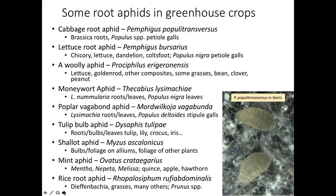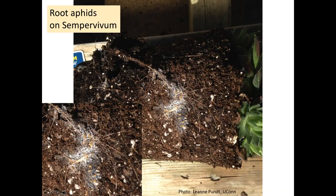When dealing with root aphids, this is the kind of thing people first encounter. They might take the plant out of the pot and see waxy white areas, and if you look more closely you can see little pale yellowish aphids among those waxy spots. We've actually had growers get their plants rejected because of root aphids. They didn't seem to be affecting the health of the plants in those cases, but they were still rejected at the time of sale.